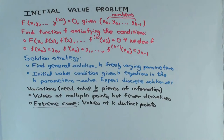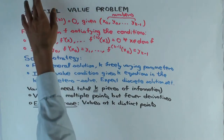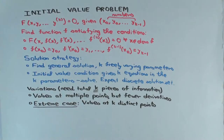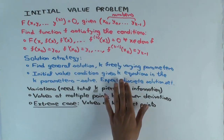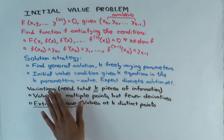How do you solve an initial value problem in general? One way of doing it is you first find the general solution. In general, we expect that the general solution to an order k differential equation should have k free parameters — k unknown constants. You can specify various values of those constants to get solutions to the differential equation. Now you want to find those values of those constants for which you get a solution that satisfies the initial value condition.